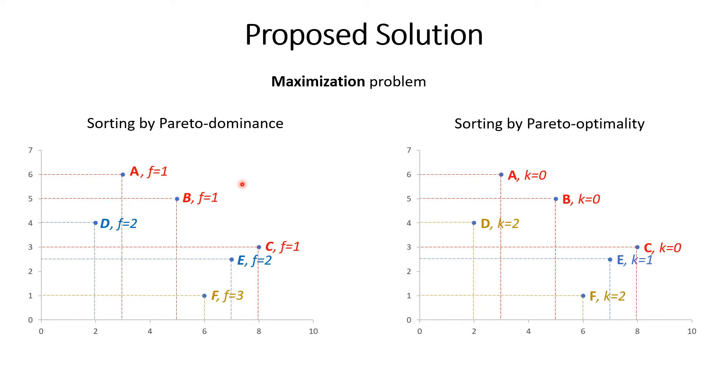Pareto optimality-based sorting works differently. In this case, for every point we calculate its Pareto optimality value as the number of points that dominate the current one. After that, all points are assigned to fronts in the descending order of their Pareto optimality. Corresponding example is given on the right. Here three points A, B, and C are not dominated by any other one, so their Pareto optimality value is zero and they are assigned to the first front.